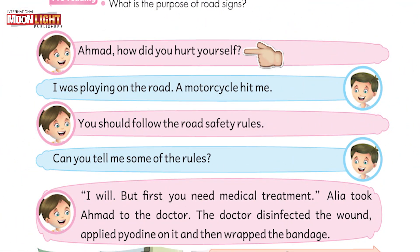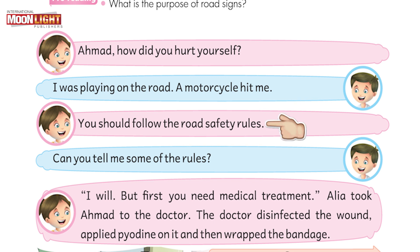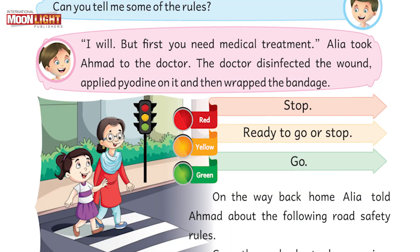Alia asks Ahmad: "How did you hurt yourself?" Ahmad replies: "I was playing on the road. A motorcycle hit me, thus I got hurt." Alia replies: "You should follow the road safety rules." Ahmed questions: "Can you tell me some of the rules?" Alia replies: "I will, but first you need medical treatment."